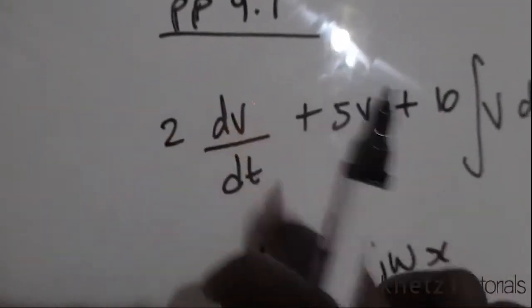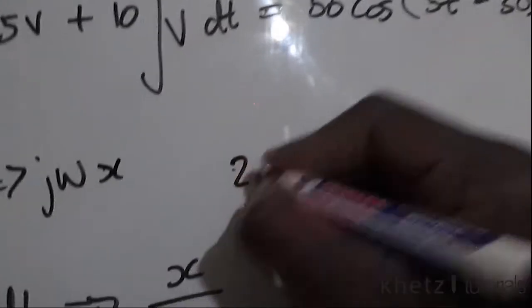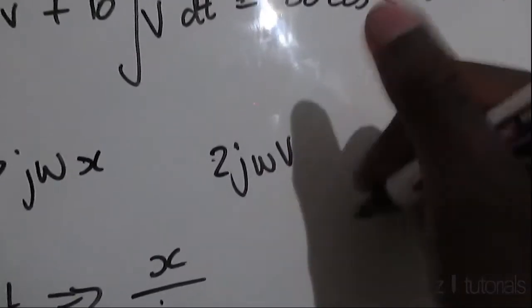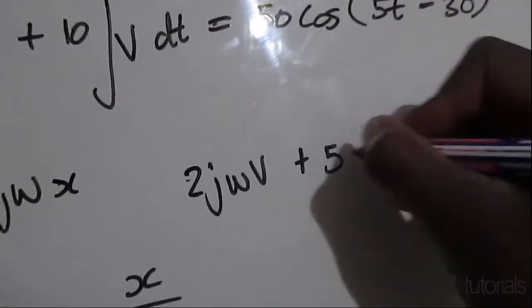Here we have 2dv/dt which means you apply this, so you're going to have 2jωv plus 5v which is that just take it as it is, then plus v is being integrated over here so we're going to have v divided by jω.